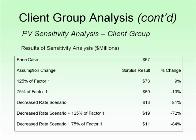Here's the original slide. What they're doing is some analysis on what would happen to a base situation if we changed two different parameters. In this particular table, there's factor one that they're changing, and then there's a decreased rate scenario — so they're changing the rate as well. They look at what happens if we change factor one, what happens if we change the rate, and then what happens if we do both.